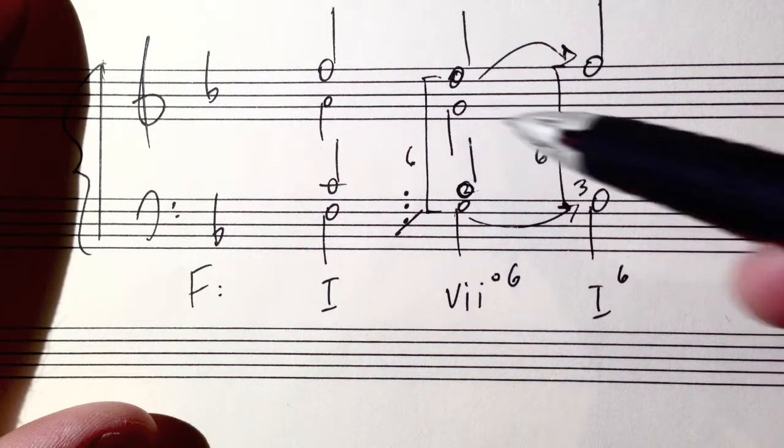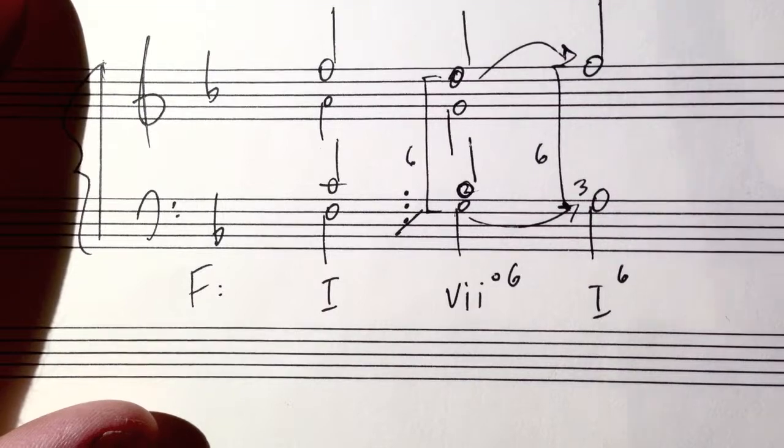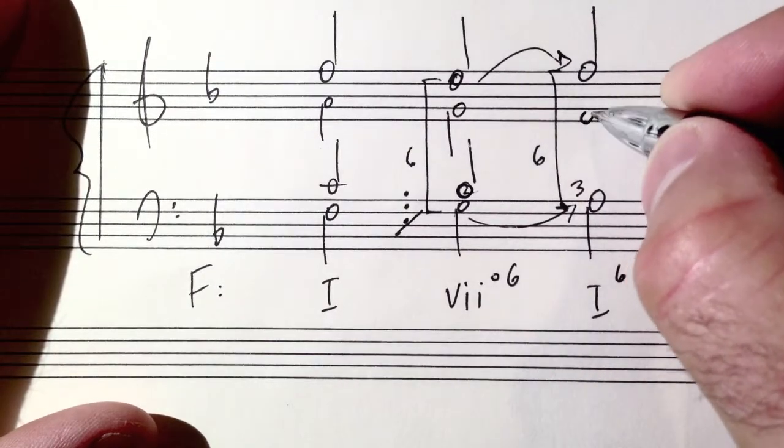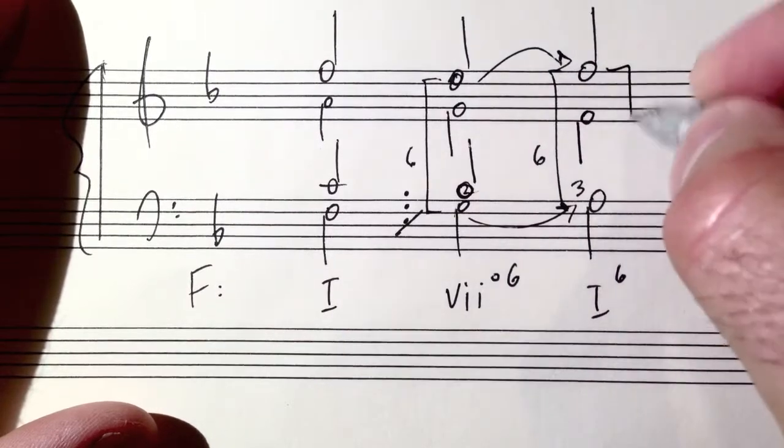Now notice how there's a G natural heading up - scale degree one moving into scale degree two. So now this G natural, it's very important that you cannot head up to the A natural, or else you will have parallel octaves. So in this case the G natural has to descend down to the tonic, opening up to the octave to avoid the parallel octaves.